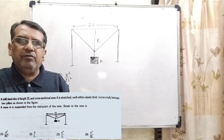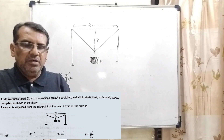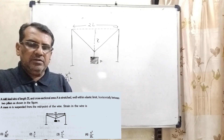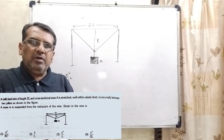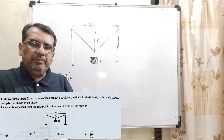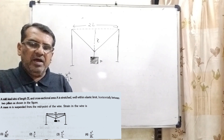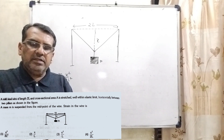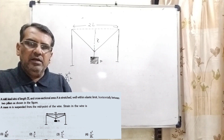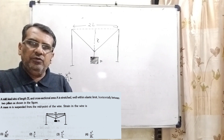We have four options. Option first: X² / 2L². Option second: X / L. Option third: X² / L. And option fourth: X² / 2L.